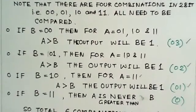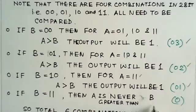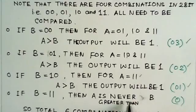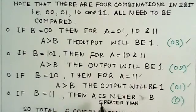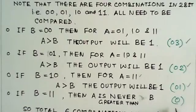Now the last one is if B is 11, then A is never greater than B, because even if B is maximum of 11, A is 11, they will be equal. So there is no combination here which will give me A greater than B.